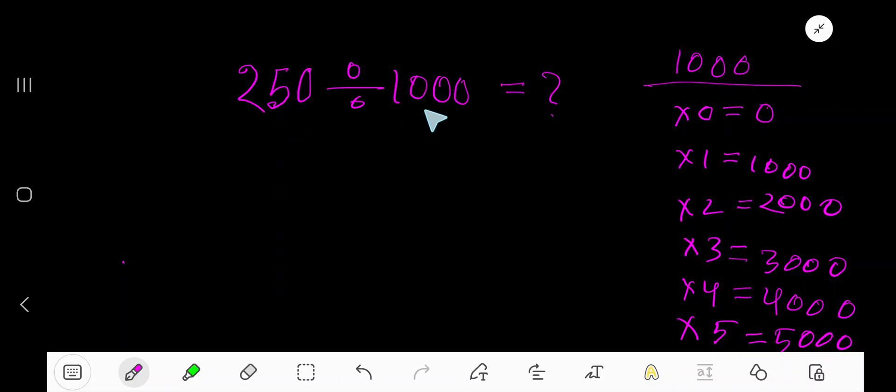250 divided by 1000. Divide 250 by 1000. 1000 goes into 250 how many times? 0 times actually, because 250 is less than 1000.